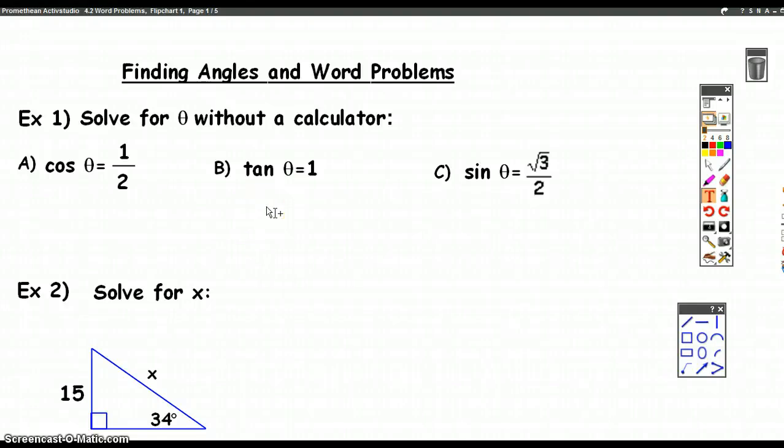All right, so here we're going to talk about solving or finding angles and some word problems. What I mean by solving angles is really solving these equations. So for instance, I've got the cosine of an angle is equal to 1 over 2, and I'm expected to solve for theta without a calculator. So it's key that I can't use a calculator. That's important because we want the answers to be exact, not decimal approximations.